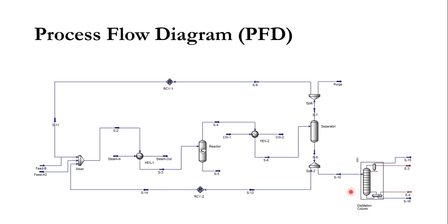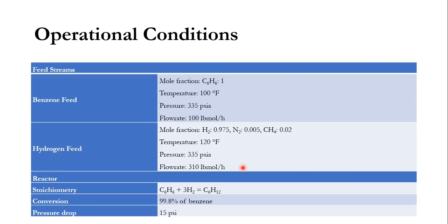Similarly, the liquid stream is split: part is recycled while the majority goes to the distillation column, and cyclohexane is obtained from the bottom of this column. We have to simulate this overall process in Aspen HYSYS, including both vapor and liquid recycle systems. The benzene feed is a pure feed at 100°F, 335 PSIA, 100 lb-mol/hr. The hydrogen feed contains hydrogen, nitrogen, and methane. In the reactor, benzene reacts with 3 moles of hydrogen to produce cyclohexane with 99.8% conversion of benzene and a pressure drop of 15 PSI.